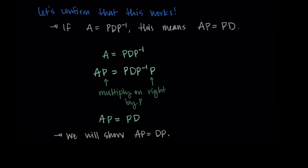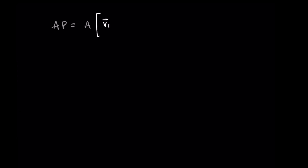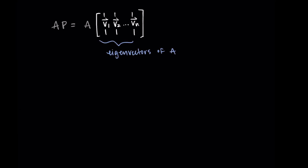We're going to show that A times P equals D times P, given the conditions stated at the beginning. I'll compute AP first and then PD separately and show they're equal. If I take A and multiply it by P, my P matrix is made from the eigenvectors V1 through Vn. Following how matrix multiplication works, the columns of the product are A times V1, A times V2, all the way through A times Vn — matrix-matrix multiplication broken into matrix-vector multiplications.